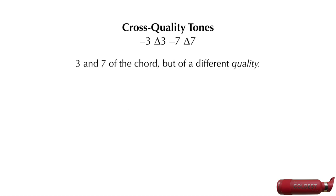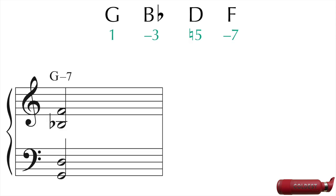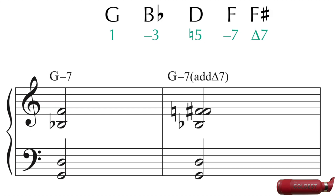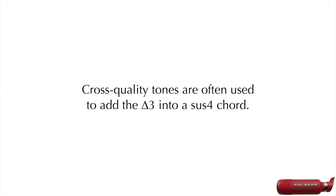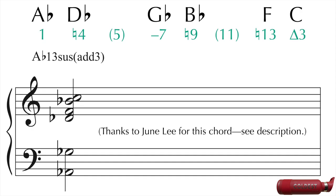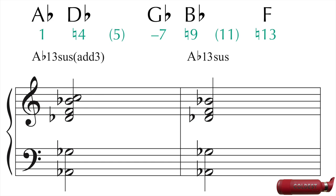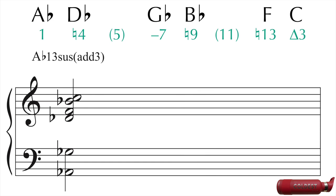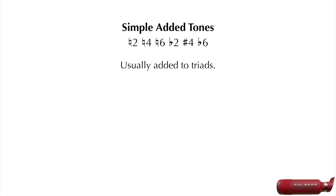Cross-quality tones are the 3 and 7 of the chord, but of a different quality than the chord is. For example, since the quality of G minor 7 is minor, this chord doesn't contain the major 7, which is F sharp. So if you add the major 7 into the chord, you have G minor 7 add major 7. Cross-quality tones are often used to add the major 3 into a sus4 chord. For example, take the following chord. If we consider only the first 5 tones, we've got Ab 13 sus. But if we consider also the C in the top, it functions as an added major 3, so now we've got Ab 13 sus add 3.